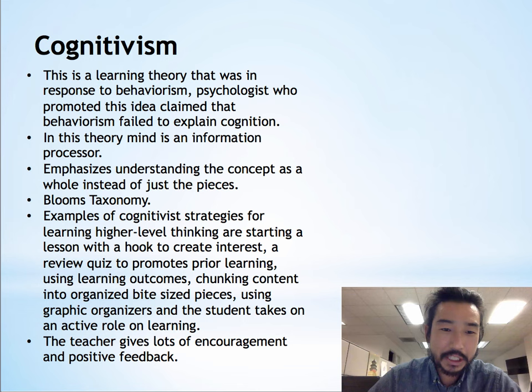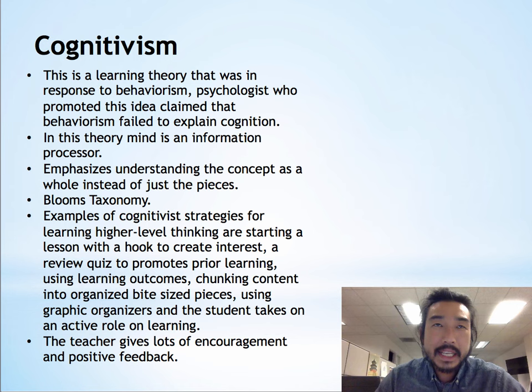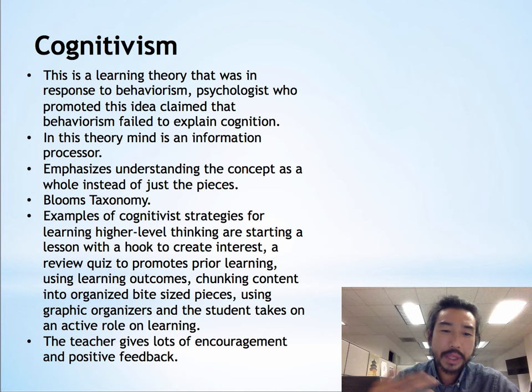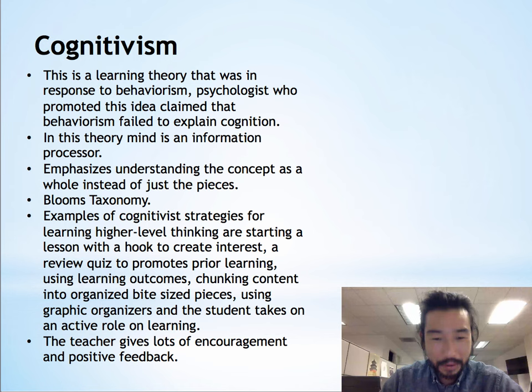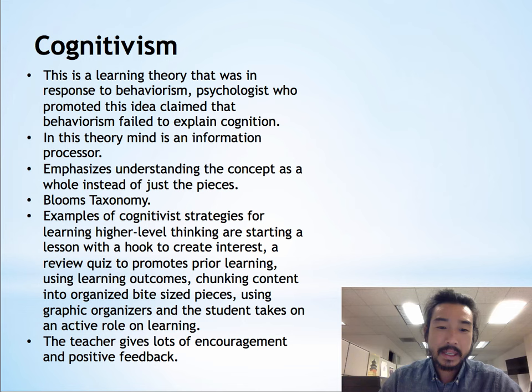Some examples of cognitivism strategies for higher level thinking are: starting a lesson with a hook to create interest in the learning product or whatever concept you're trying to learn; starting with a review quiz that's going to promote prior learning; having very well organized learning content using learning outcomes, chunking content to bite-sized pieces, and using graphic organizers. The student really takes on an active role in learning, but the teacher is also there to teach and guide the students into what needs to be learned. Also, the teacher gives a lot of encouragement and positive feedback within cognitivism.